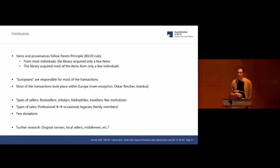Various types: booksellers, scholars, bibliophiles, travelers, very few institutions but they are also represented. And of course various types of sales: professional booksellers or brokers as Oscar Rescher, as well as for example professors who within their career acquired one, two, three, five manuscripts at some station. At the end of their life or actually after their death, family members sold them to the library. Quite few donations as far as we can tell now.